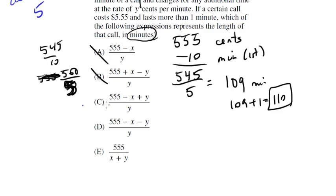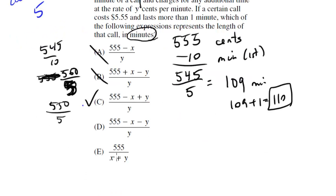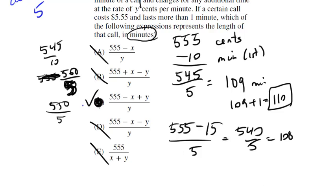How about C? 555 minus X. Well, X was 10, so we have 545. But then we're going to add 5 back on, so we get 550 divided by 5. And 550 divided by 5 is 110. That looks good. Let's check D. Let's check E. E's not going to be good, right? It's 555 divided by 15. That's not even going to get us 110. How about this guy? 555 minus X minus Y. So it's 555 minus 5 minus 10. So minus 15 over 5. So it's 540 over 5, which is 108. Not what we're looking for. So it's not D. Best answer here is C.